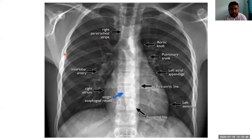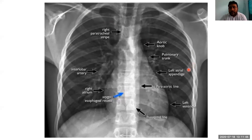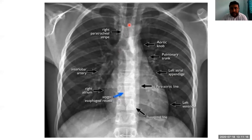These are the ribs — we look for any fracture or deformity. Likewise, on the opposite side, we see the ribs one by one. Next, we come to the mediastinum. In the mediastinum, the tracheal rings do not appear on the X-ray, but the column of air — which is hyperlucent, blackish in color — you can see; this is the trachea.